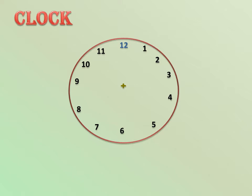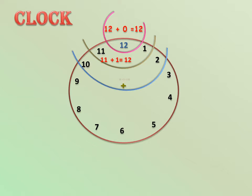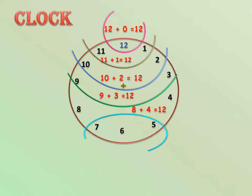12 plus 0 equals 12, 11 plus 1 equals 12, 10 plus 2 equals 12, 9 plus 3 equals 12, 8 plus 4 equals 12, 7 plus 5 equals 12, 6 plus 6 equals 12. This is very tricky, right?